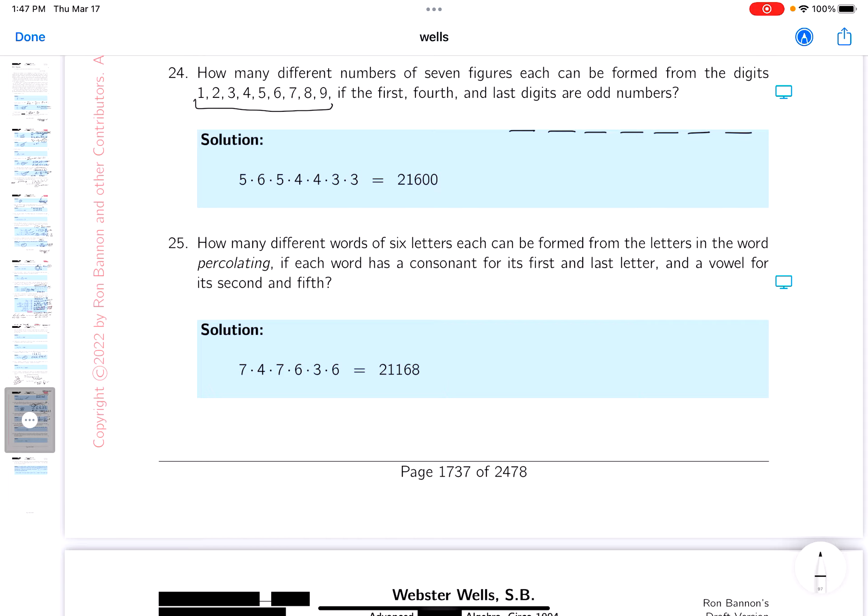If the first - this is the first digit - the fourth digit, that's one, two, three, four, fourth digit, and the last digit, that's the last digit, are odd numbers. Well, how many odd numbers do you have?